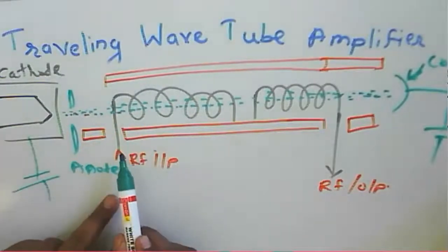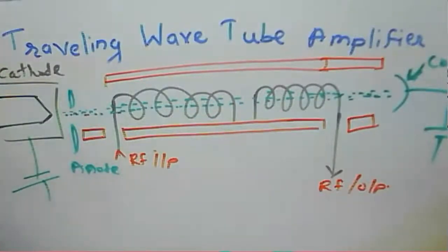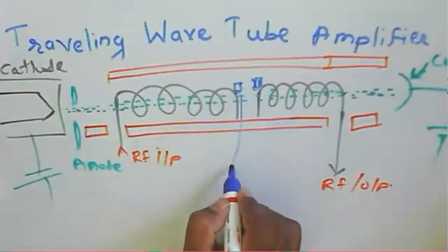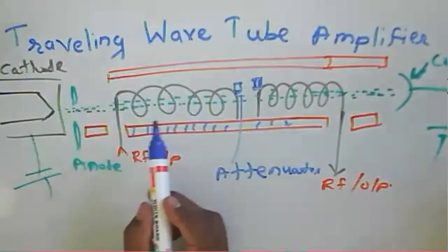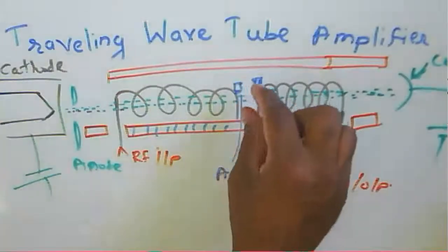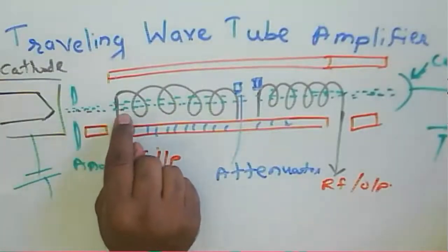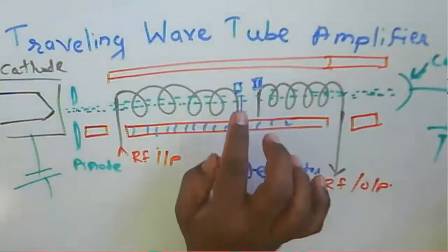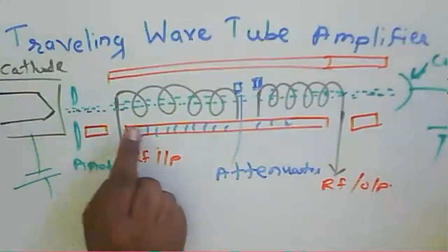We provide the RF input and get the RF output. Between input and output, two helix tubes are used with an attenuator placed between them. The attenuator and focusing magnets are both present. The red component is the focusing magnet and the attenuator is placed between the two helix tubes. Electrons pass through the first tube section, then through the attenuator, and then through the second tube section.